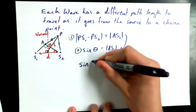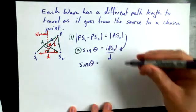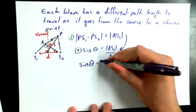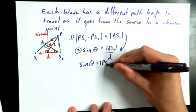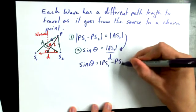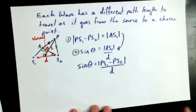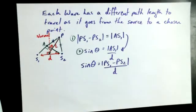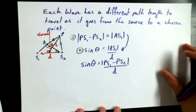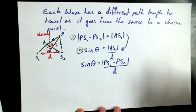So we get sine of theta equals path length difference PS1 minus PS2 over D. Not trying to play any tricks here and I don't want anybody to be misled. So we can come back and we can talk about the geometry afterwards.